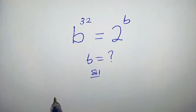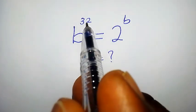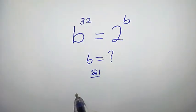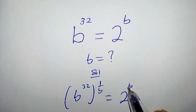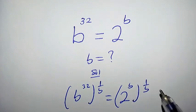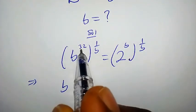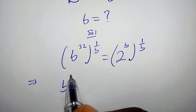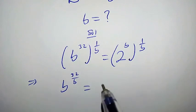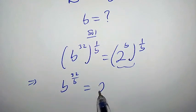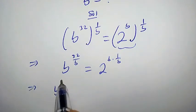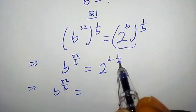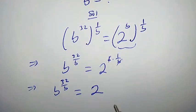Solution. First, let us multiply both powers by 1 over b. So we are going to have b to the power of 32 times 1 over b equal to 2 to the power of b times 1 over b. This implies that 32 times 1 over b, that is 32 over b, and on the right side 2 to the power of b times 1 over b. This implies that b to the power of 32 over b is equal to 2.